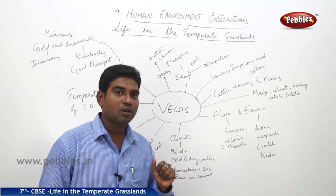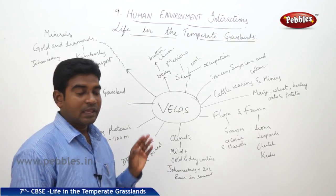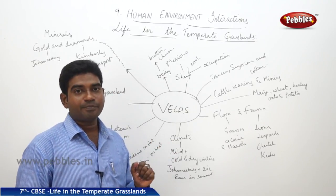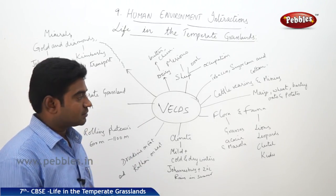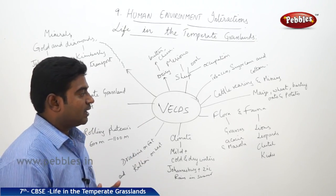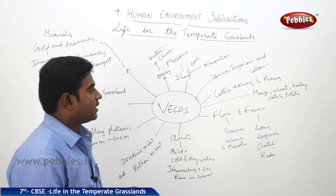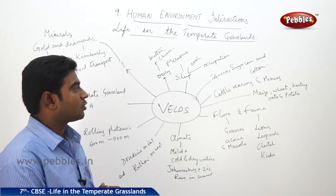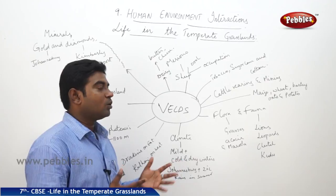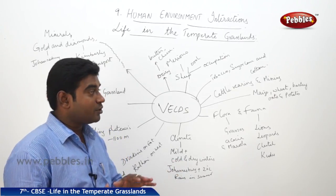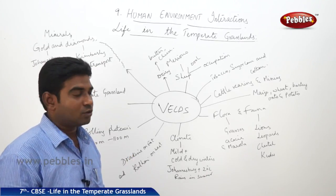Coming to the flora and fauna of the Velds — the flora consists of grasses; acacia and marula are the trees found here. Coming to the fauna, animals found here include lions, leopards, cheetah, and kudu. The staple crops grown here are maize, wheat, barley, oats, and potato. The commercial crops grown here are tobacco, sugarcane, and cotton.